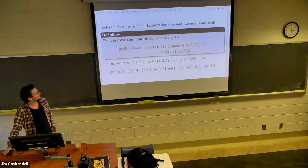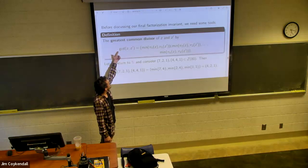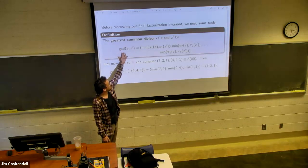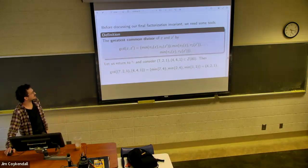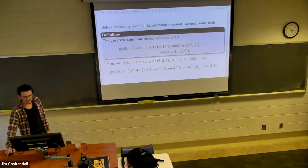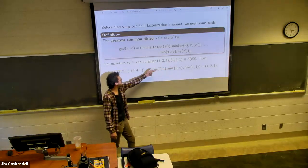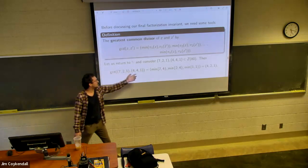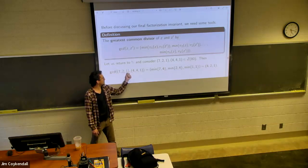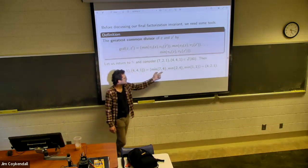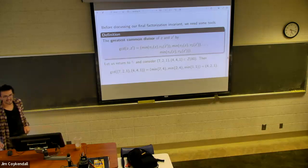So to get to our next invariant, we need a couple definitions. The greatest common divisor, kind of complicated to state. I've often pondered on better ways to state it, but I figured just an example might clear it up, right? So you take two factorizations, say 7, 2, 1 and 4, 4, 1, in Z of 80. Then the GCD of these two, you just take the minimum of the first coordinate, take the minimum of the second coordinate, which is 2 and 4, minimum of the third coordinate, which is 1, 1, and you end up with 4, 2, 1. So I think in practice, it's a lot more simple than trying to state it generally.